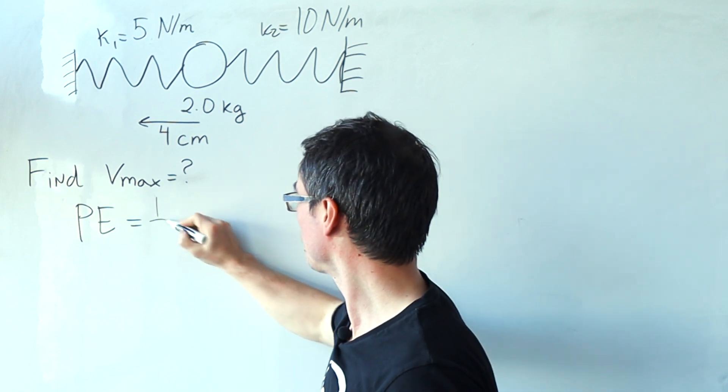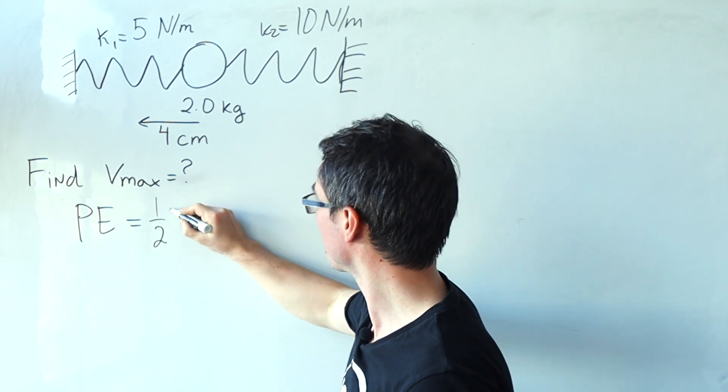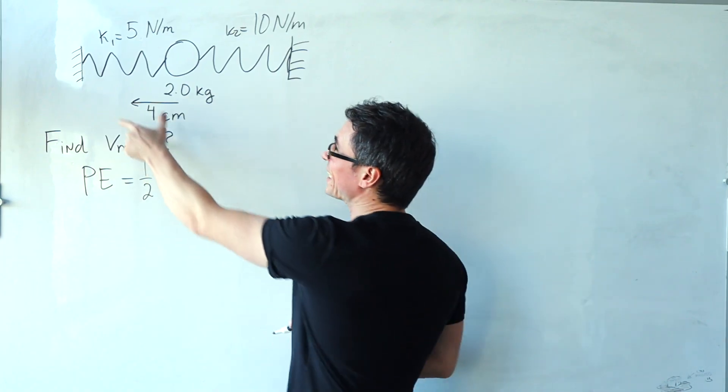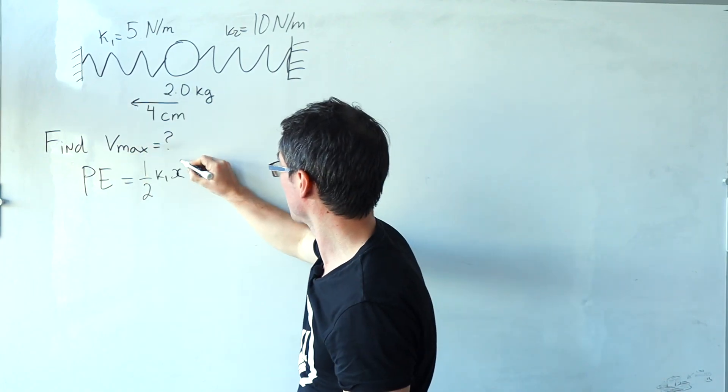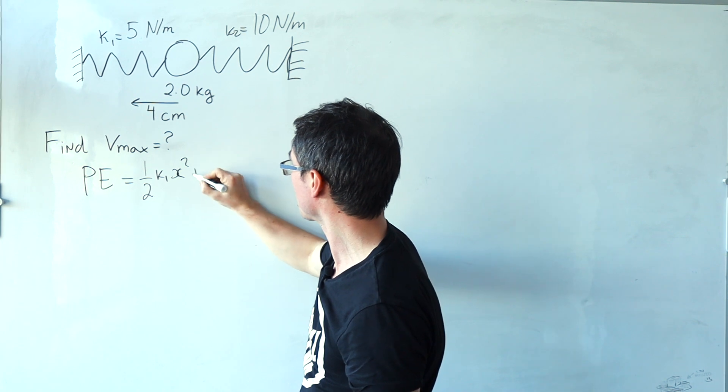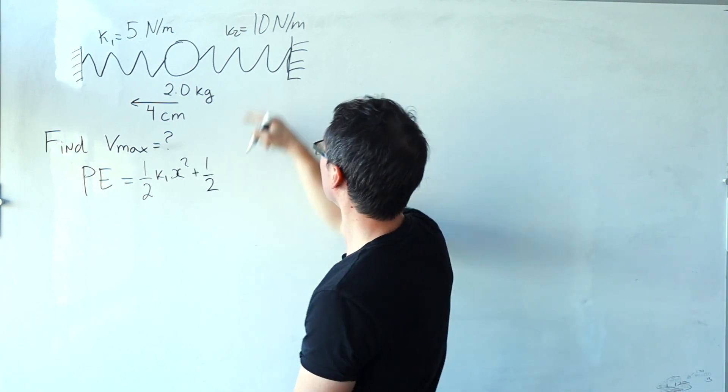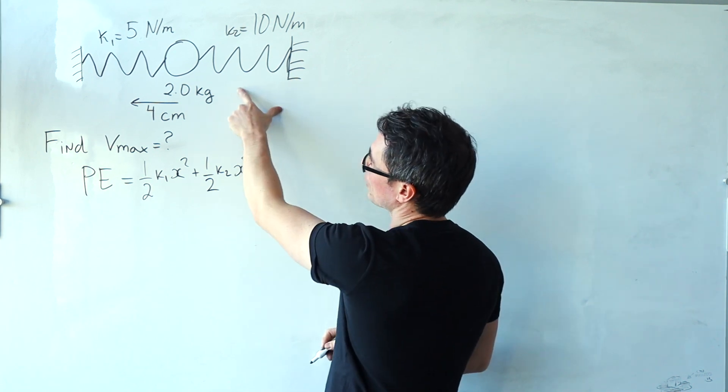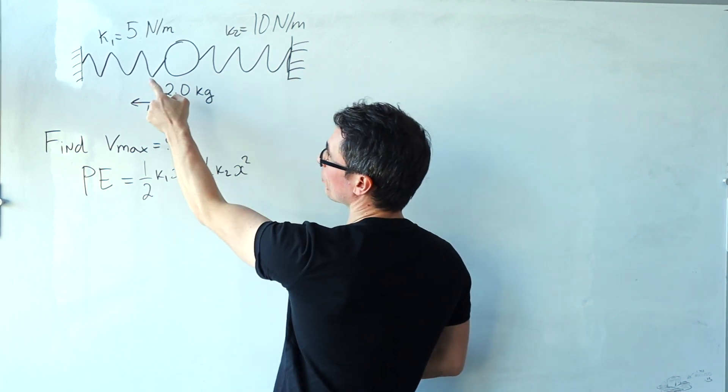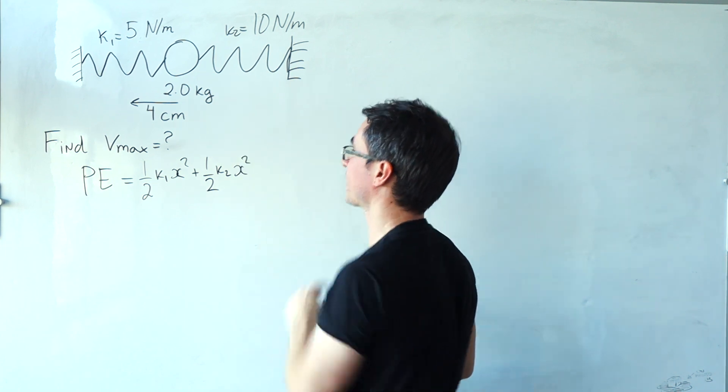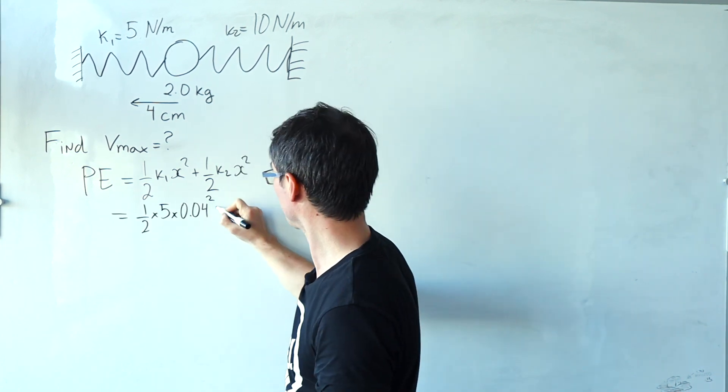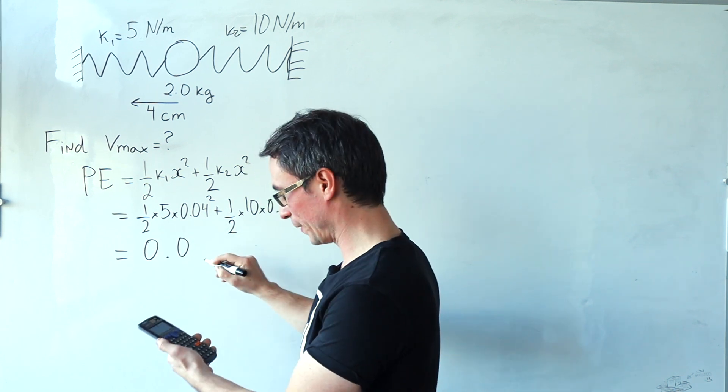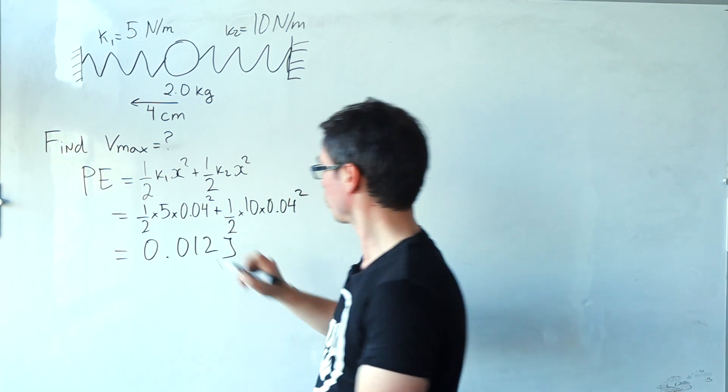a half times the first spring constant. Let's call that K1 times the compression of the first spring. Let's call that X squared plus a half times the spring constant two times the extension of the second spring. Remember, if this one is compressed by four centimeters, this will be extended by the same amount, giving us a grand total of 0.012 joules.